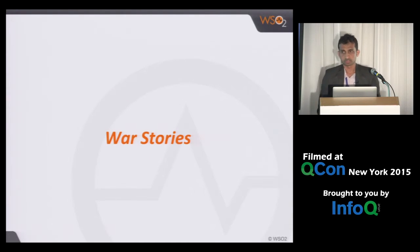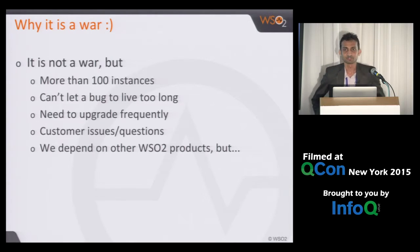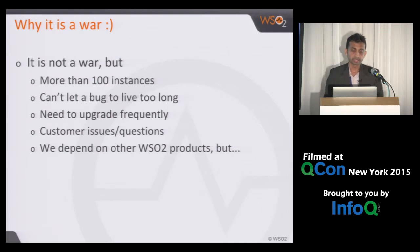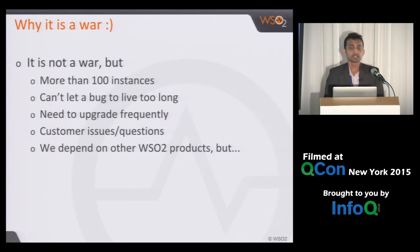Now I'll come to the war stories. Why is it a war? This is a live system and we have a lot of instances. We have to keep an eye on them and provide high availability for our services. Most importantly, we can't let a bug exist in the system for a long time. There are no bug-free software, and in the middleware we used to build this cloud, there are bugs. When we find a bug, we have to fix it as soon as possible, otherwise some user might get affected.